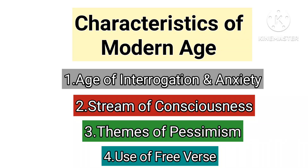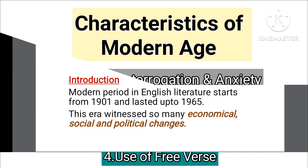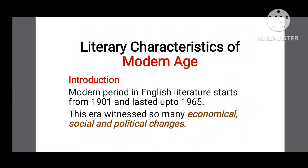Assalamu alaikum friends, welcome back to my YouTube channel. In today's video we will discuss the topic: literary characteristics of the modern age. Before going into a detailed explanation, let's first understand what is the modern age. Queen Victoria's death marked the end of the Victorian period, and the modern period started with a new mindset and new techniques. Modern period in English literature starts from 1901 and lasted up to 1965.